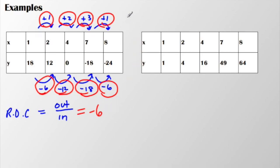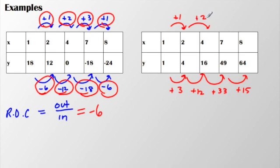Let's take a look at this next example. My output values here change from 1 to 4 is a positive 3. This is a positive 12, positive 33, and positive 15. I don't know if this is going to be a linear relationship or not. Let me check the top. Plus 1, plus 2, plus 3, plus 1. Kind of had that same change as the first one.